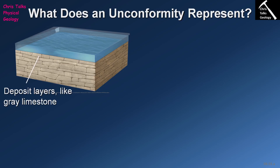We're going to think about how unconformities form and the different types of unconformity. In this model we have a situation where sediments are being deposited in the ocean — in this case a grey limestone being deposited as nice horizontal sheets, as you would expect. Because these sediments are deposited underwater, the rate of erosion is extremely low, so we have a net build-up of sediment over time.